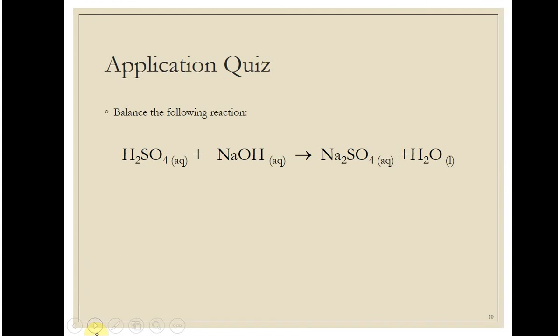This next one is an acid-base reaction with polyatomic ions. Same thing — if you are more comfortable doing it as H, S, O, and Na individually, good for you. But technically, oxygen is in everything and hydrogen is in three of the four, which just seems like a pain. So I'm going to keep my polyatomic ions since they're the same on both sides.